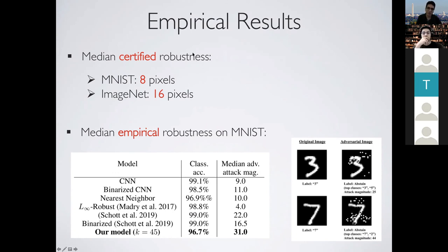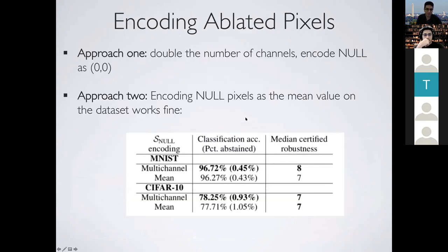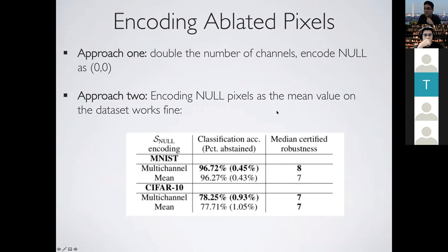Regarding the null encoding for ablated pixels: we have two approaches that perform roughly the same. One is based on doubling the number of channels and encoding null as zero, while the kept pixels have two values summing to one. The other approach encodes null as the mean value of the dataset — for example, gray pixels in the MNIST case. We see really small differences between the two cases.